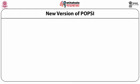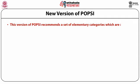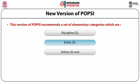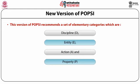New version of POPSI. This version recommends a set of elementary categories: Discipline (D), Entity (E), Action (A), and Property (P). Discipline covers conventional fields of study — for example, physics, medicine, political science. Entity includes manifestations having perceptual correlates — energy, plants, place, time, etc. Action includes manifestations denoting concepts of doing — for example, effect, efficiency, power, property.